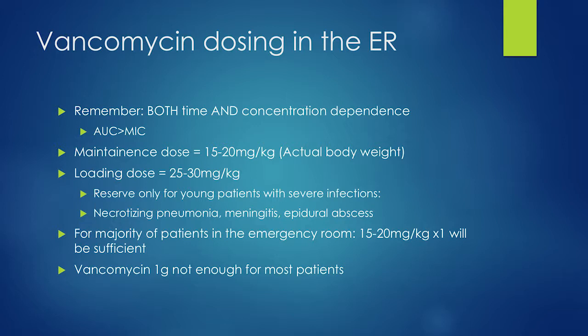Vancomycin dosing in the emergency room: remember vancomycin is both time- and concentration-dependent — area under the curve. Maintenance doses are around 15–20 mg/kg. True loading doses are 25–30 mg/kg. If treating cellulitis, you probably don't need a loading dose since vancomycin distributes well in skin tissue. If treating meningitis — where vancomycin poorly distributes into CSF — you'd want a true loading dose of 25–30 mg/kg. For most ER patients, 20 mg/kg actual body weight is sufficient. One gram of vancomycin for everyone does not work.